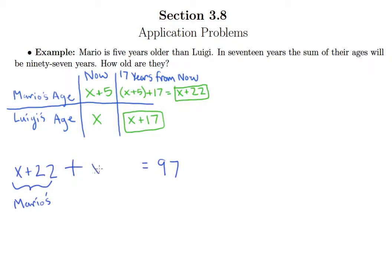I'm going to put parentheses around these not because I need to for algebraic reasons, but just to really show this whole thing is Mario's age in 17 years, this whole thing is Luigi's age in 17 years. And then we can drop out the parentheses—they really don't matter. There's just plus signs out here, so you're just distributing positive one through, which doesn't really do anything. So it's just x plus 22 plus x plus 17 equals 97.